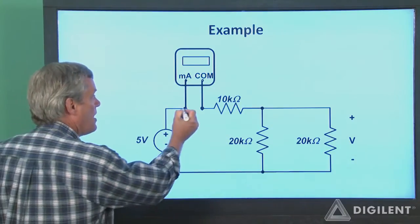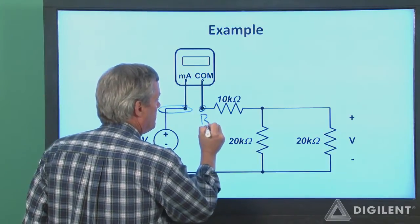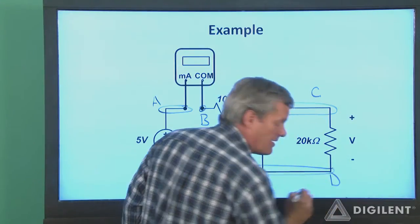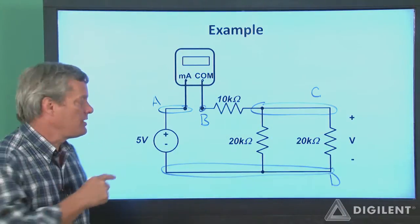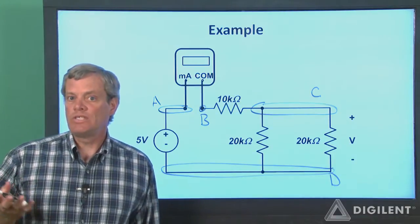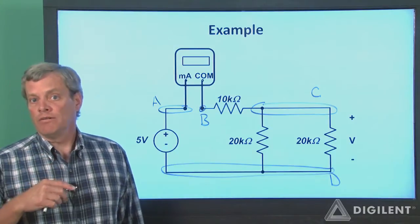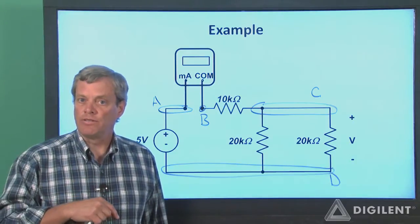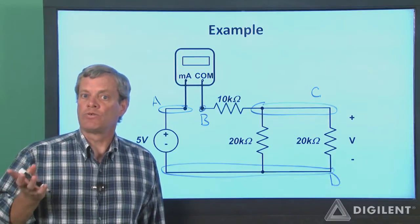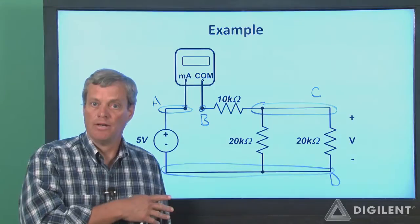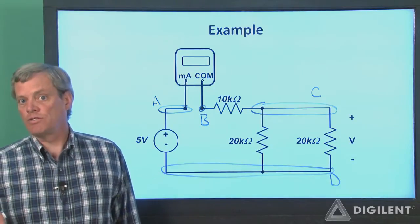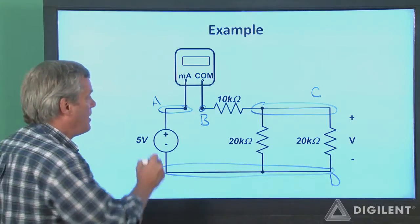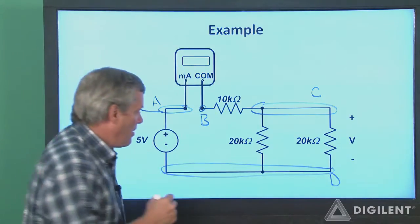First, identify the circuit nodes. I'll call this node A, this will be node B, this will be my node C, and this will be node D. Now we probably need to decide how we want to implement the source. We have a variety of ways we can use the analog discovery to apply a 5 volt difference. The voltage instrument V plus and V minus will give us 5 volts, and the waveform generator can also create a constant 5 volt difference. Remember that the analog discovery sources all apply a voltage difference relative to the discovery's ground. I'll use V plus to implement the 5 volt source. Since I need a positive voltage at node A relative to node D, I'll put V plus at node A and ground at node D.